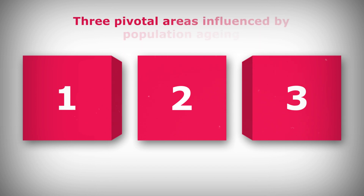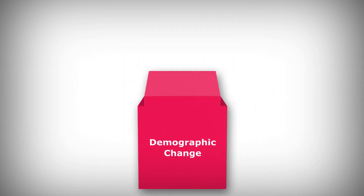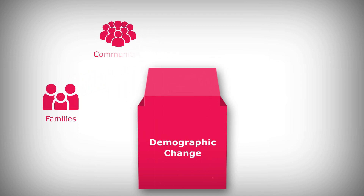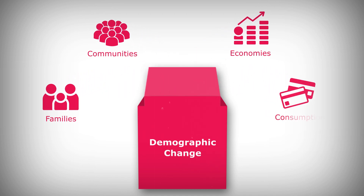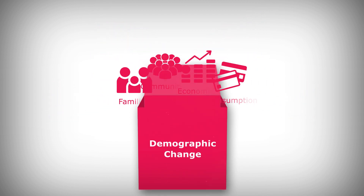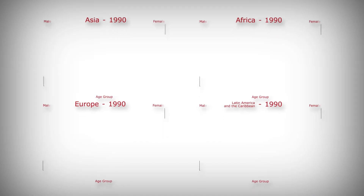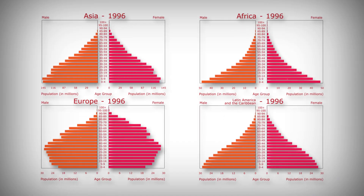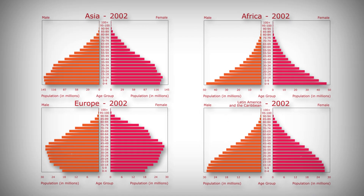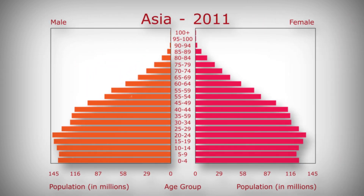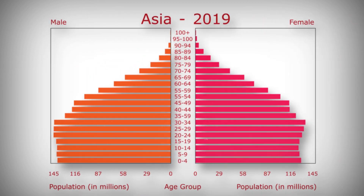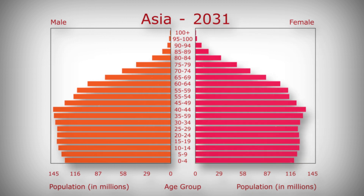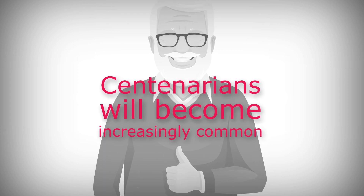Let's focus in on three pivotal areas influenced by population ageing. First, demographic change. Demographic change affects all spheres of life — families, communities, economies — shaping how they produce, consume and distribute resources. The situation is highly diverse. The majority of older individuals are women, and with a declining proportion of children over time, the 60 years and older age group is growing. But the most substantial increase is seen in those aged 80 and above. Centenarians will become increasingly common.